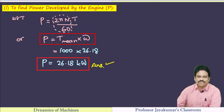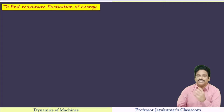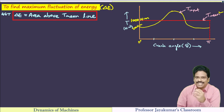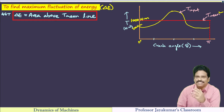We got power developed as 26.18 kW — that is our first answer. In order to determine the coefficient of fluctuation of speed, we must find the value of maximum fluctuation of energy, delta E. We know that delta E equals the area above the mean resisting torque line.